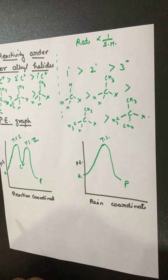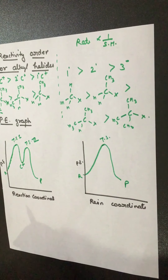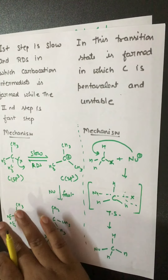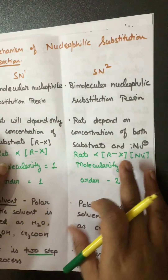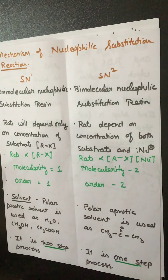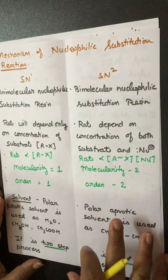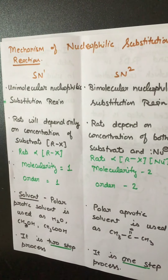So that was the comparative study of SN1 and SN2 — simple and clear. Please read it once more carefully. After SN1 and SN2, we will now move on to study stereochemistry and optical isomerism, which we will discuss in the next video. Till then, goodbye.